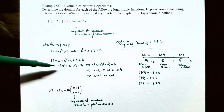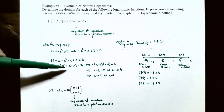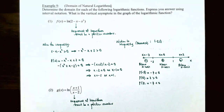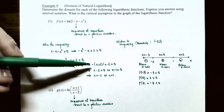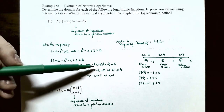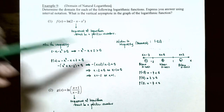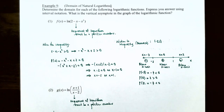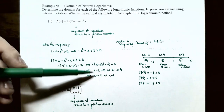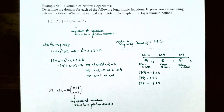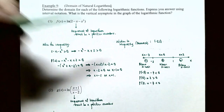Setting negative x squared minus x plus 2 equal to 0, factor out the negative: negative times (x squared plus x minus 2) equals 0. Factor the trinomial: negative times (x plus 2)(x minus 1) equals 0. The negative factor can't be zero, so x plus 2 equals 0 gives x equals negative 2, and x minus 1 equals 0 gives x equals 1. These zeros divide the number line into three intervals: x less than negative 2, negative 2 to 1, and x greater than 1.